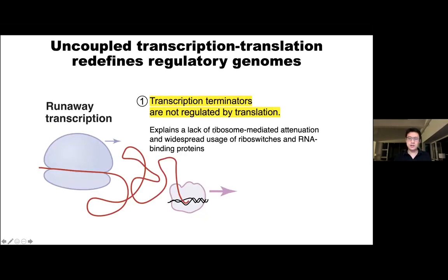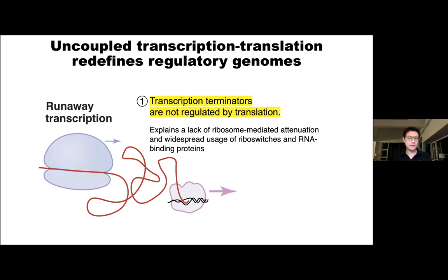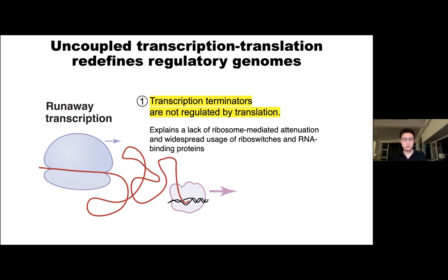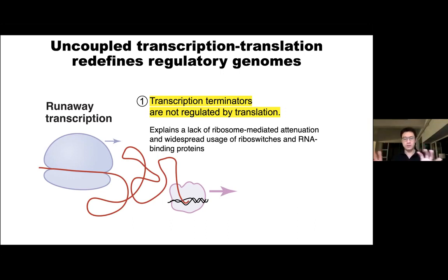Most transcription in Bacillus probably happens without a closely trailing ribosome. This explains something noted anecdotally but now makes sense: in Bacillus, there are very few or almost no ribosome-mediated transcriptional attenuation mechanisms. Instead, they use riboswitches and RNA binding proteins to regulate co-transcriptional transcription — explaining the different space of possible gene regulatory networks allowed between E. coli and Bacillus subtilis.